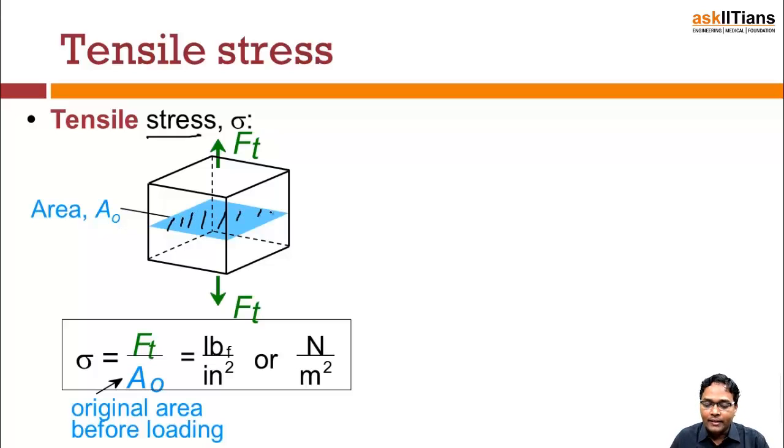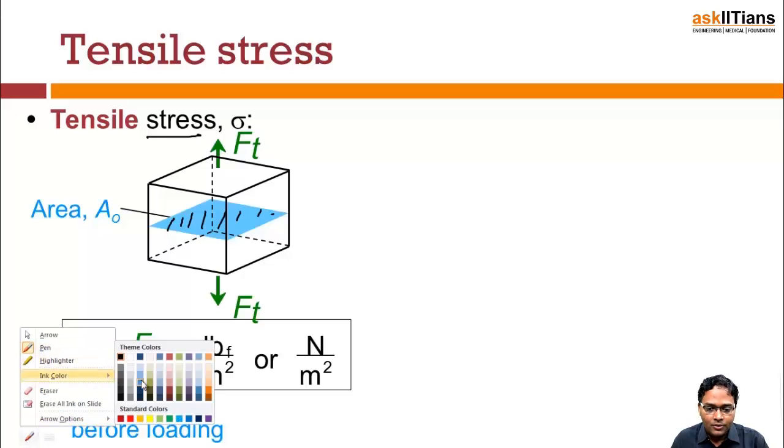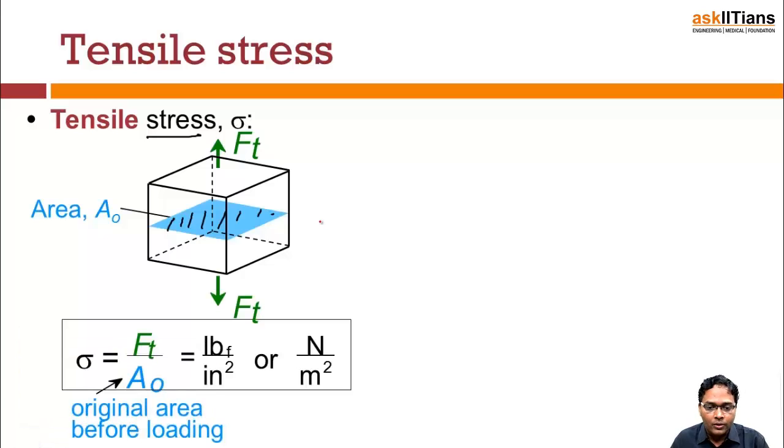If we talk about tensile stress, let's say this is our cross-sectional area that we are referring to. This is the cross-sectional area we are referring to, and we are applying a force here and in the downward direction. What is going to be the tensile stress? Tensile stress is defined as sigma.